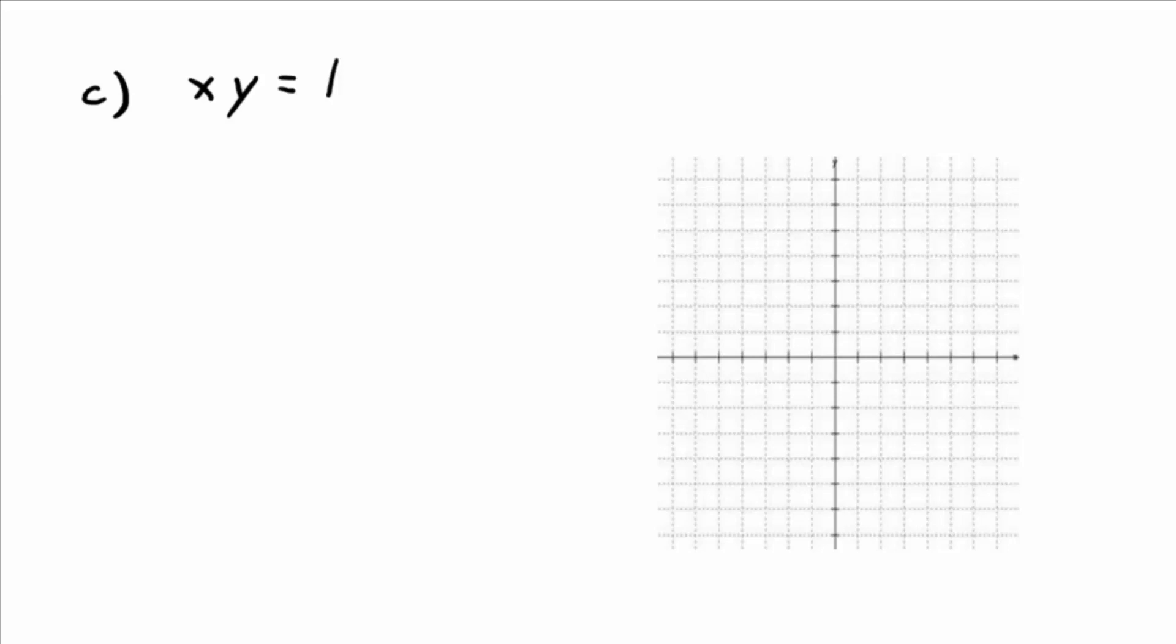The good news is you can go back to techniques you're familiar with to graph this one, just solve it for y. It's really easy to solve for y. So if you have x times y equals 1, how do you solve it for y? Yeah, just divide both sides by x, right? So you get y equals 1 over x.